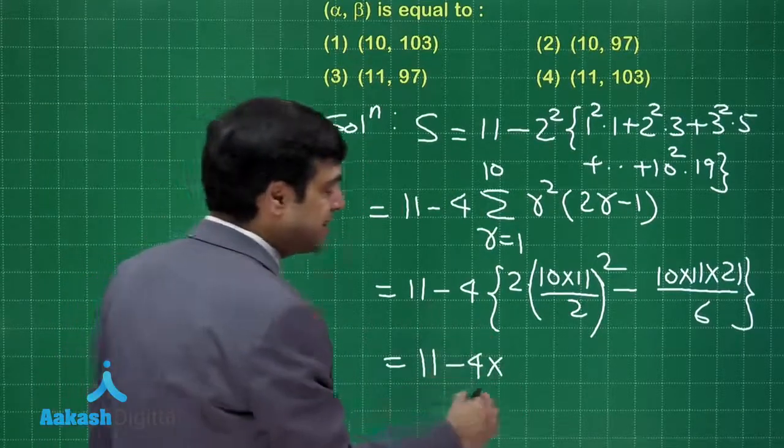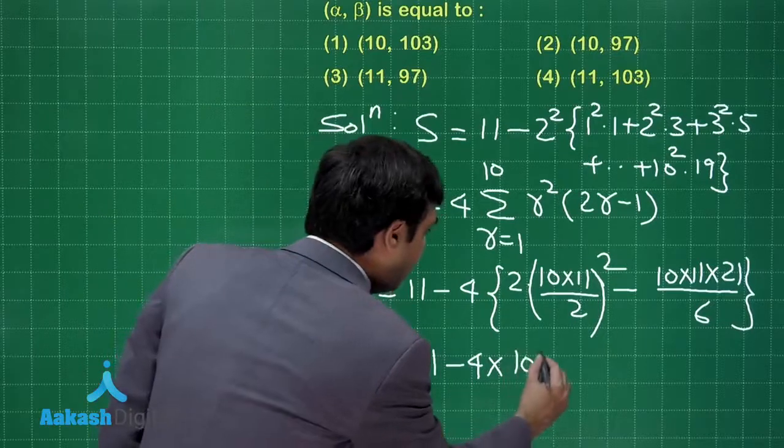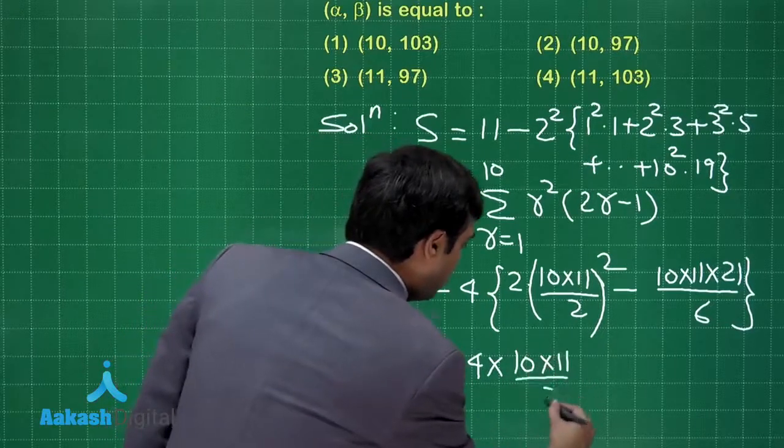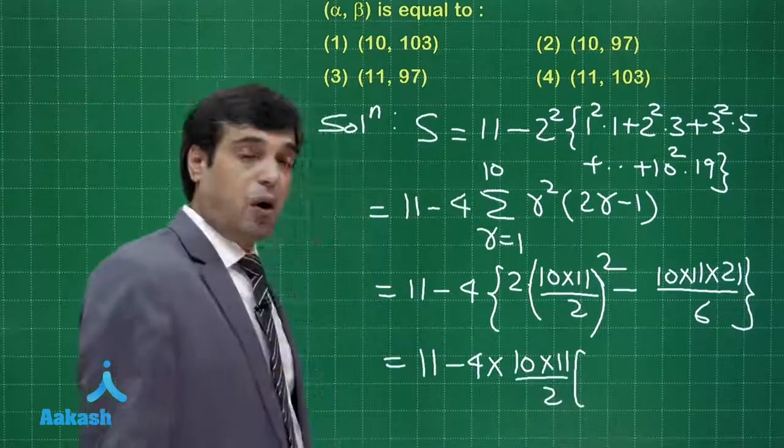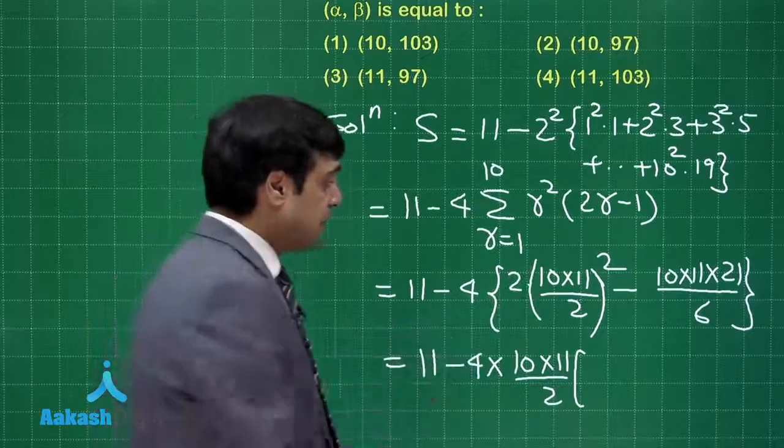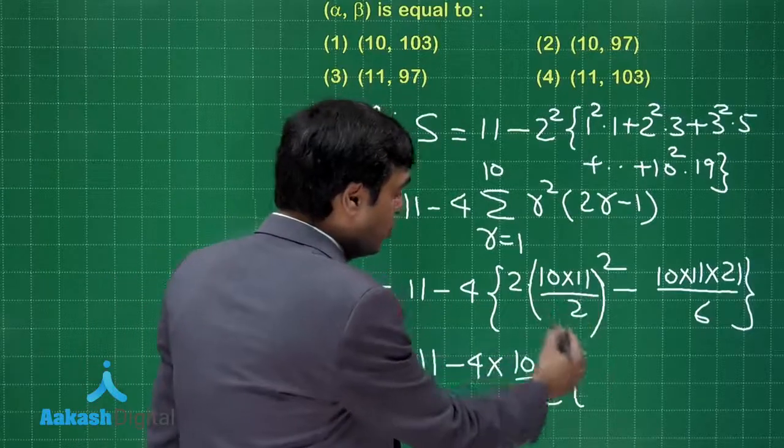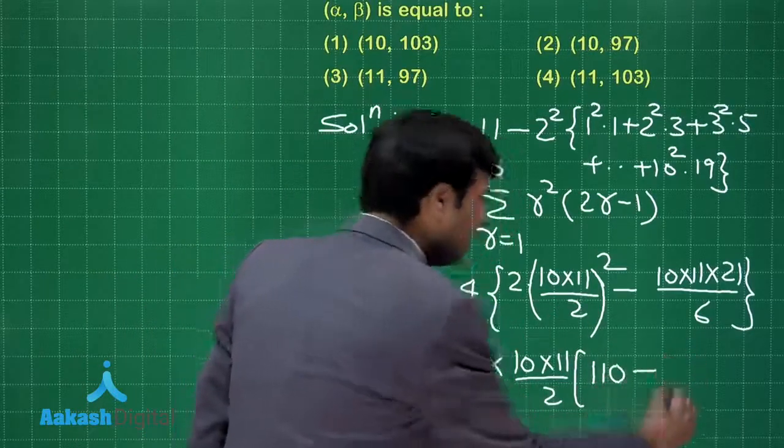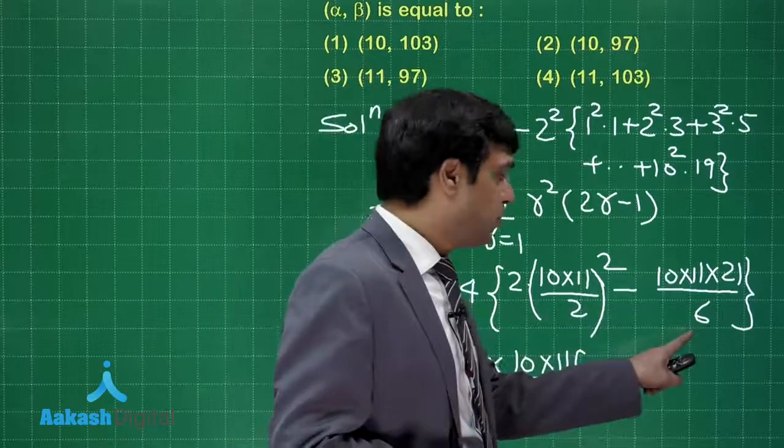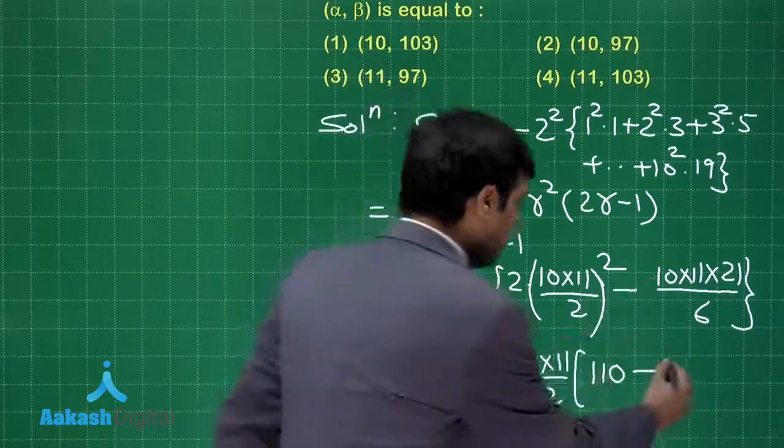We can see that we can take 10 into 11 upon 2 common. On taking this term common, what we are left with: 10 into 11 upon 2 into 2, that is 110 here, minus 10 times 11 upon 2 taken common, we are left with 7.